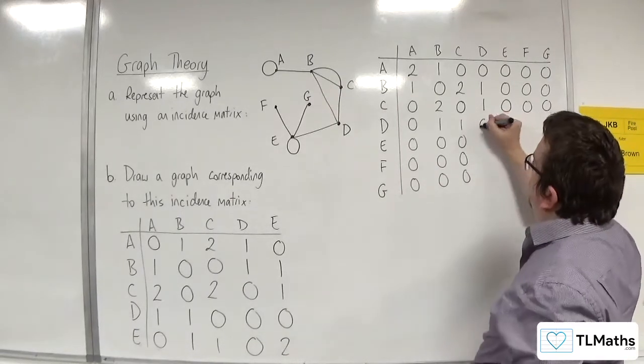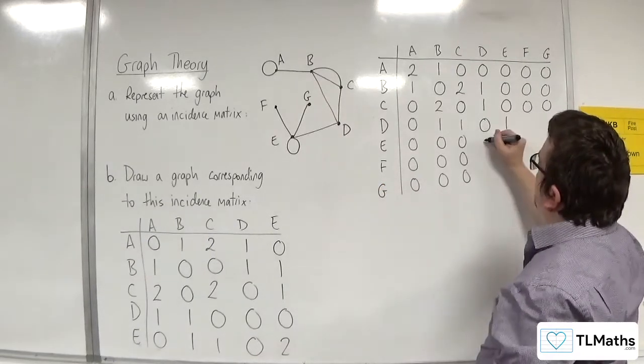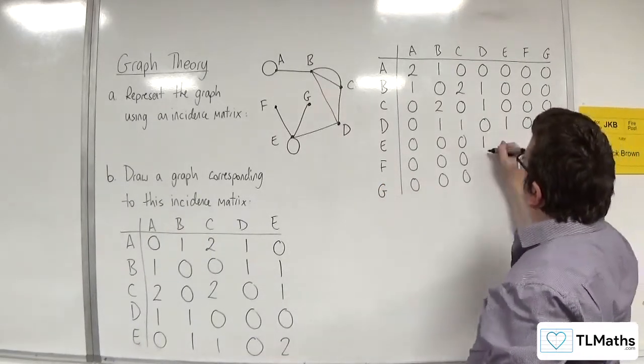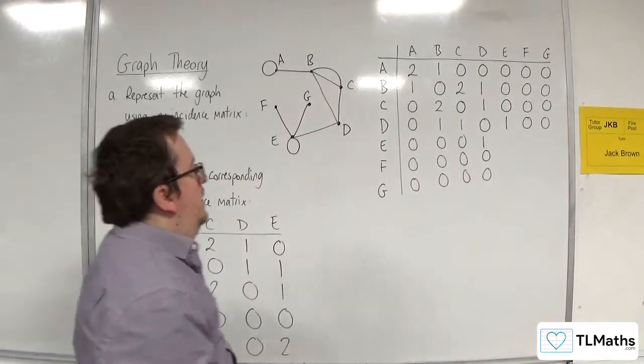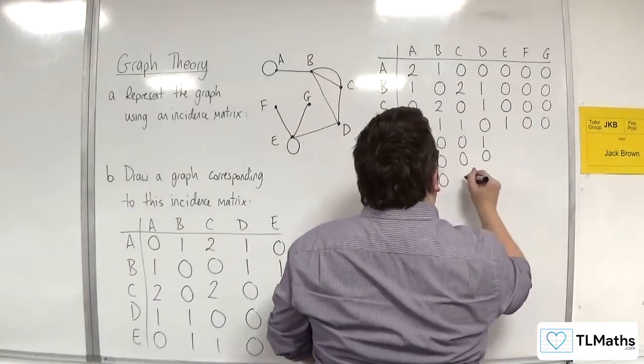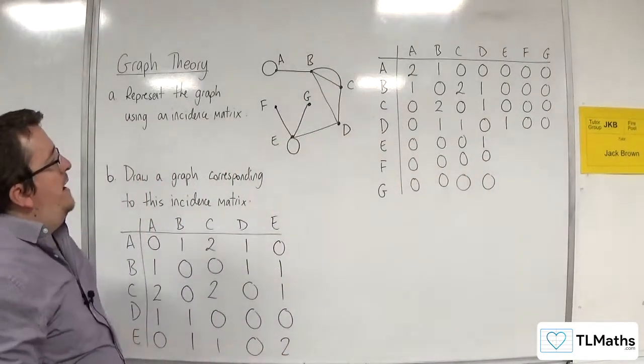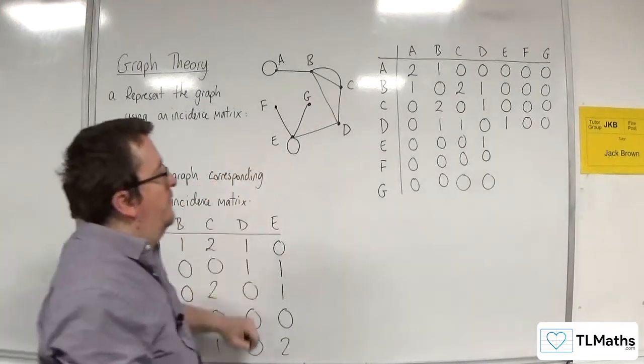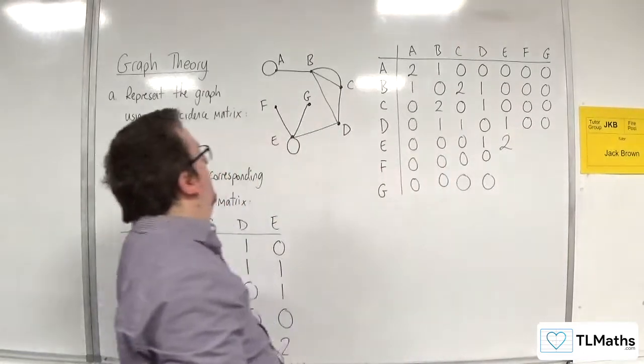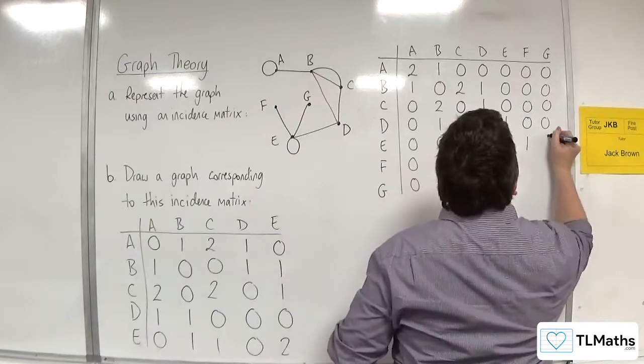D is not connected to itself. It is connected to E by a single edge. I haven't really drawn that bottom row very well - let's fix that. So then we've got E. E is connected to itself via that loop, so we're going to put two in there. It is connected to F and G by single edges.